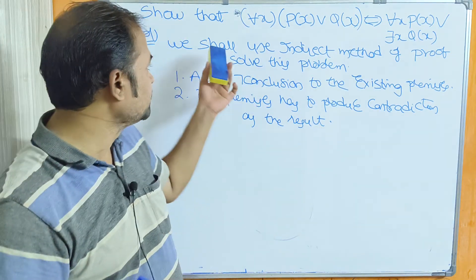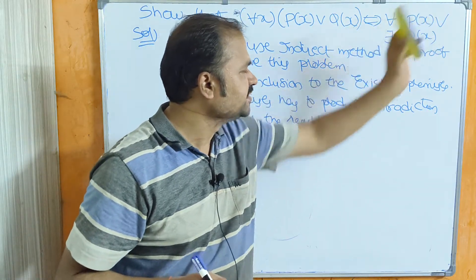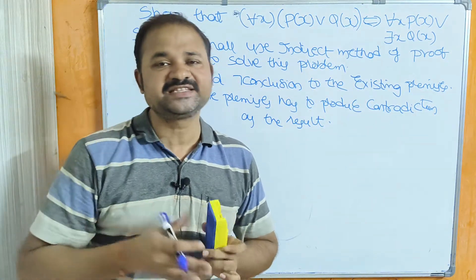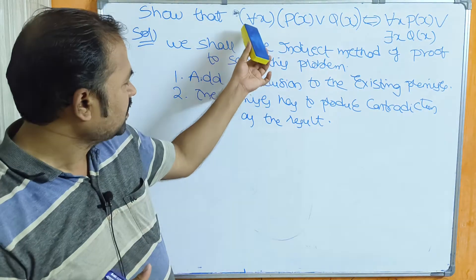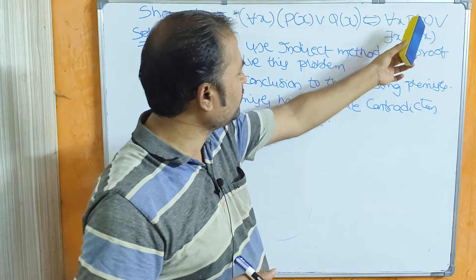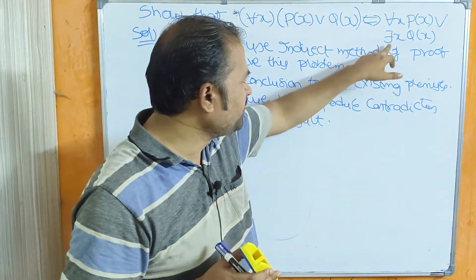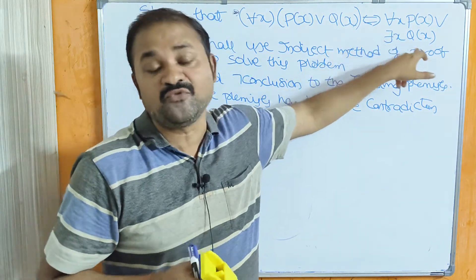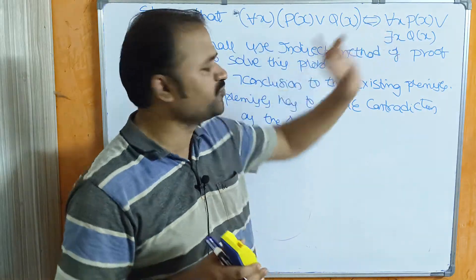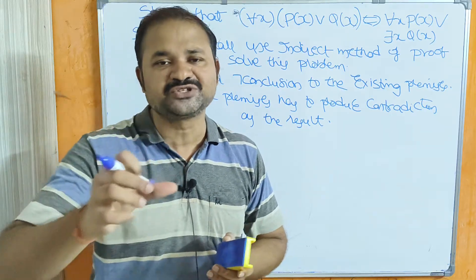Let's see this example: show that for all x, P(x) or Q(x) is equal to for all x P(x) or there exists x Q(x). This problem comes under inference theory of predicate logic. On the left-hand side we have for all x P(x) or Q(x), whereas on the right-hand side we have for all x P(x) or there exists x Q(x). If in place of the existential quantifier we had for all x, we could solve the problem directly.